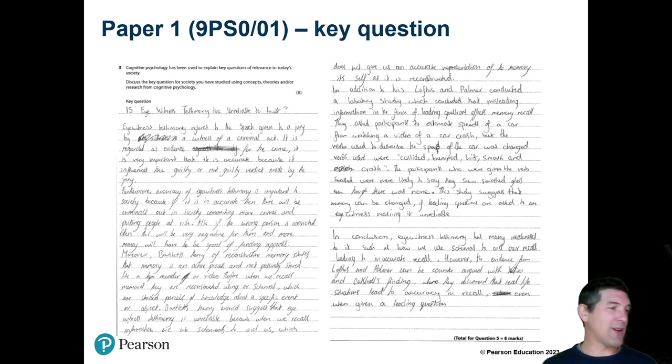So this one was awarded four marks out of eight and the AO1 and AO2 are both judged to be at level two out of the four levels in the mark scheme. Mostly accurate knowledge and understanding, however this is not well developed and lacks specific detail and depth. And for the evaluation, superficial application. This is an example of the psychological concepts and theories relating to eyewitness testimony. Most of the content is limited to the link to eyewitness testimony in the key question, so it's limited as opposed to really effective evaluation.